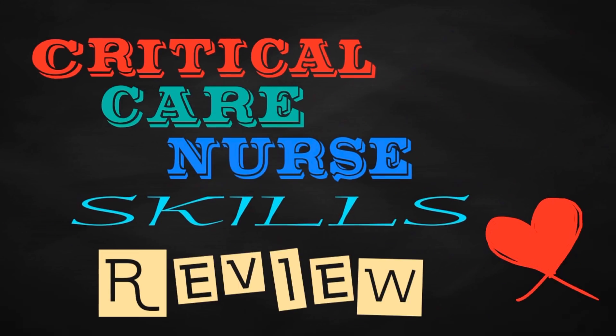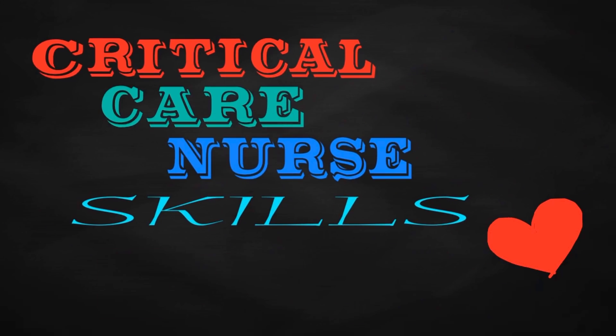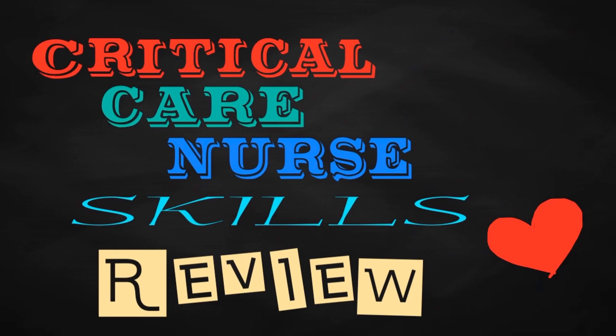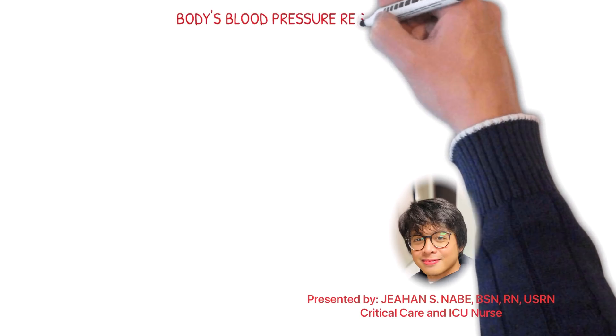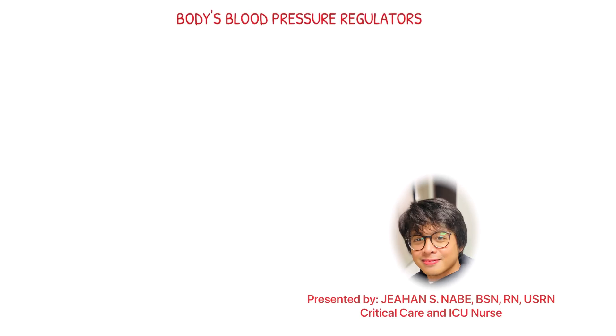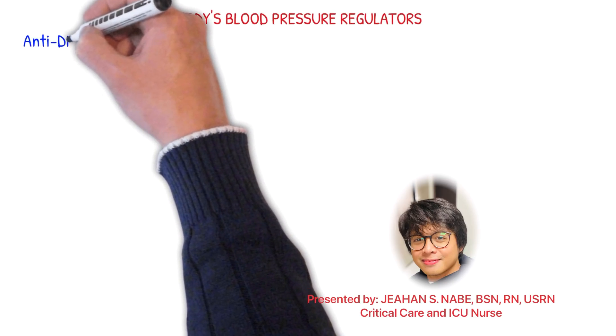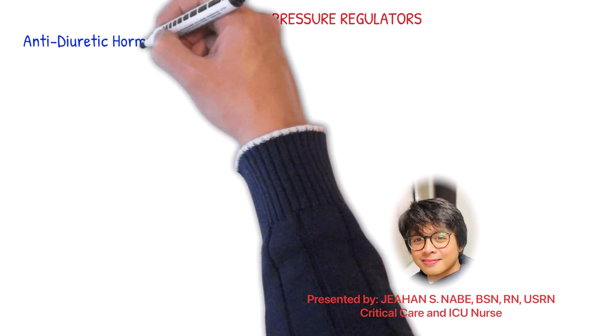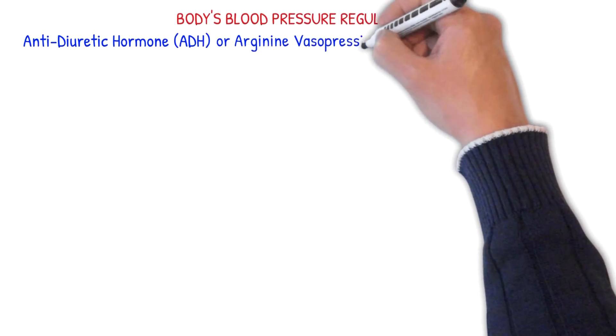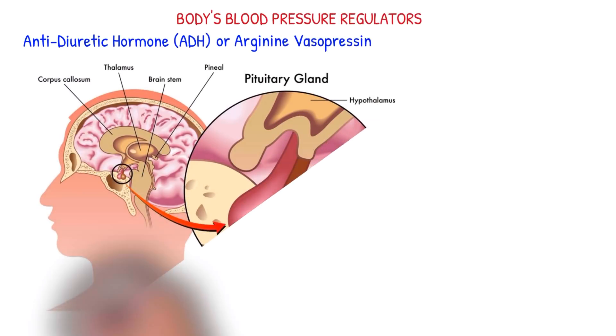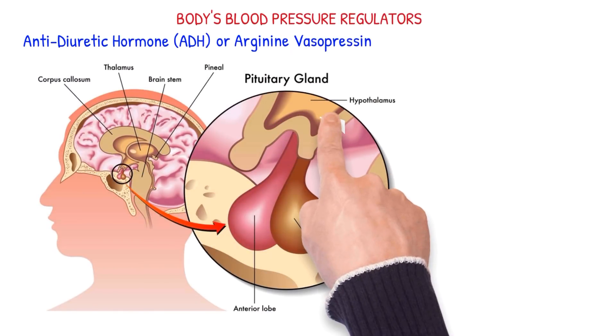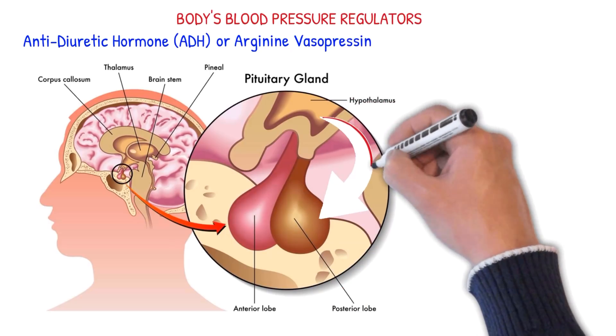Aside from the baroreceptor reflex, another important physiological mechanism in regulating blood pressure is the hormone. One important hormone that plays a role in blood pressure regulation is the antidiuretic hormone or ADH. ADH is also called arginine vasopressin. It's a hormone made by the hypothalamus in the brain and stored in the posterior pituitary gland.